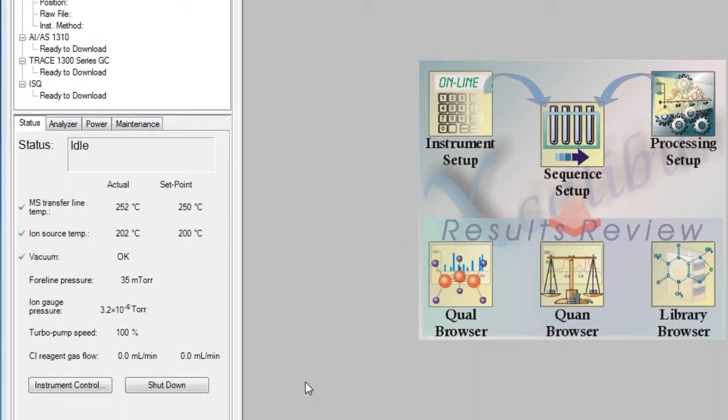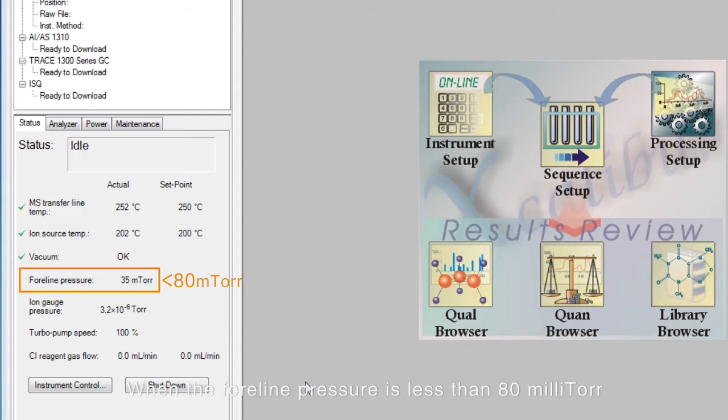When the foreline pressure is less than 80 milliTorr, you can do a leak check and then tune it.